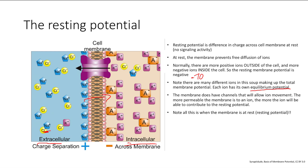On the other hand, there's more potassium inside the cell, so potassium would like to go out if it could. If potassium leaves, the inside of the cell becomes more negative. So potassium has a negative equilibrium potential.